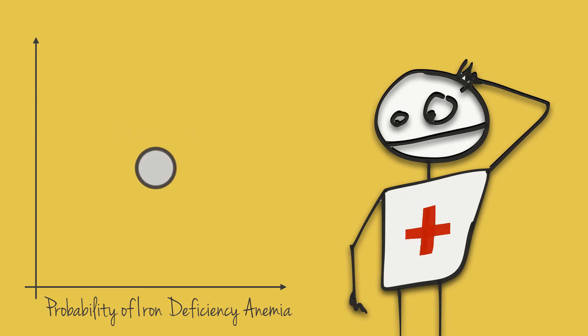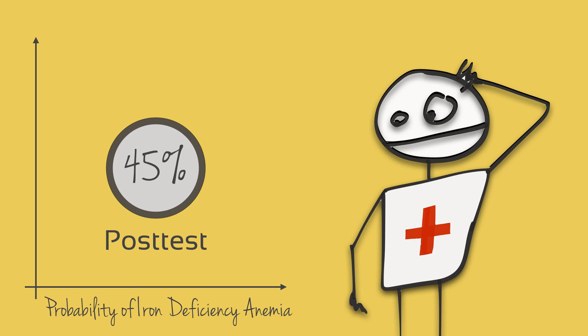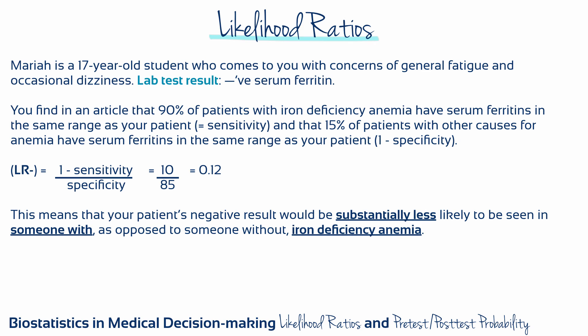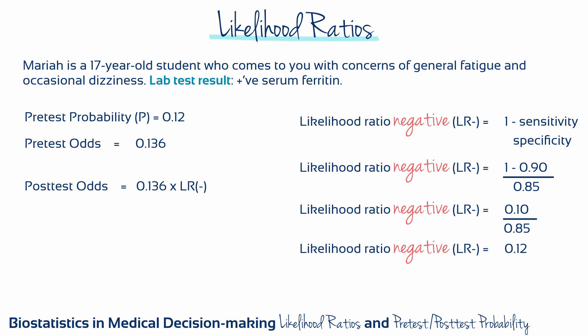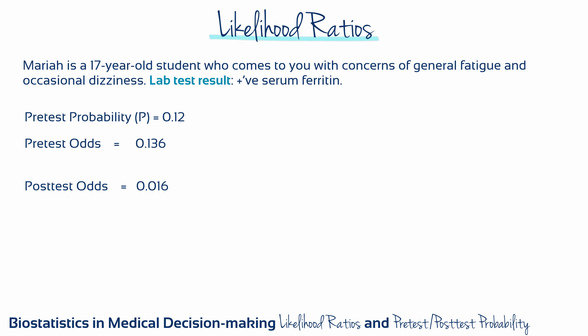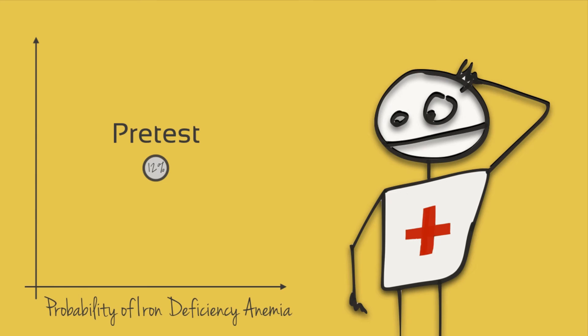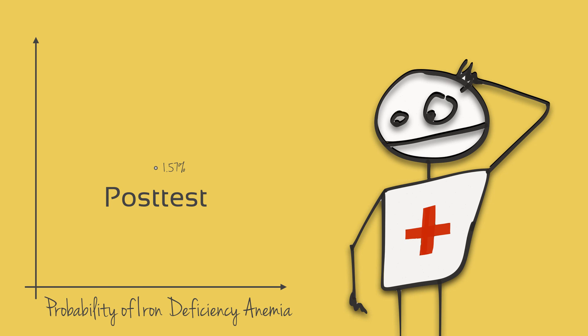The positive serum ferritin test increased the likelihood that Mariah does indeed have iron deficiency anemia. Now let's look at the calculations if Mariah had had a negative serum ferritin test result instead. The pretest probability and odds are the same as before. This time we calculate a negative likelihood ratio, which gives us a value of 0.12. Doing the calculation gives us a post-test odds of 0.016, and converting back to probability gives a final answer of 1.57%. So if Mariah's serum ferritin test had been negative, the likelihood of iron deficiency anemia would have decreased.